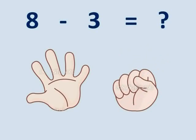Now, count the remains: 1, 2, 3, 4, 5. So, 8 minus 3 is equal to 5.